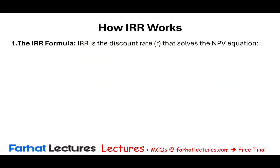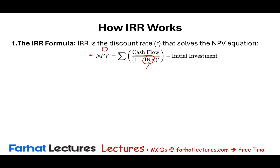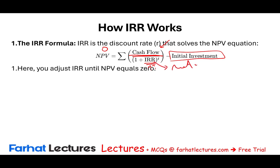The IRR formula: when the sum of cash flows discounted at a certain rate of return minus the initial investment equals NPV equal to zero, we have found our IRR. We take all the net cash flows, discount them at some percentage, subtract the initial investment — essentially computing NPV — and when that rate makes NPV equal to zero, we've found our IRR. You adjust the rate until NPV equals zero.